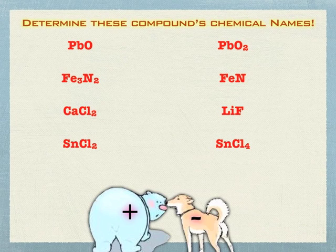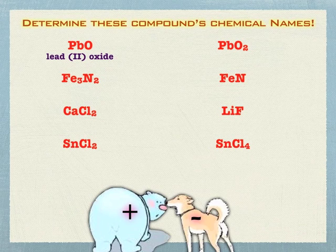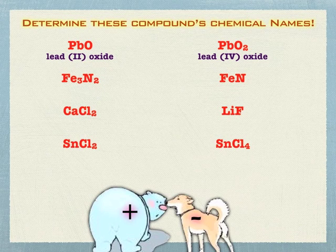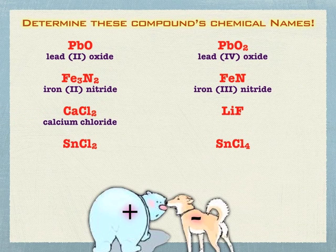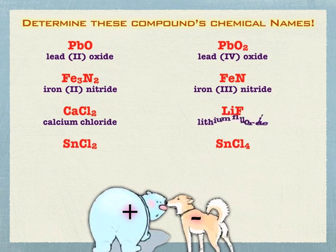Welcome back. PbO — oxide has a negative 2 charge, so lead must have a plus 2 charge: that's lead(II) oxide. If there are two oxides, that's negative 4, so you need a plus 4: lead(IV) oxide. Nitrides have a negative 3 charge, so two negative-3 nitrides are balanced by three positive-2 cations: iron(II) nitride. If there's only one iron with one nitride, that's iron(III) nitride. Calcium chloride is easy — alkaline earth metal and a halogen, no need to look up charges. Same with lithium fluoride — alkali metal and a halogen, straightforward.